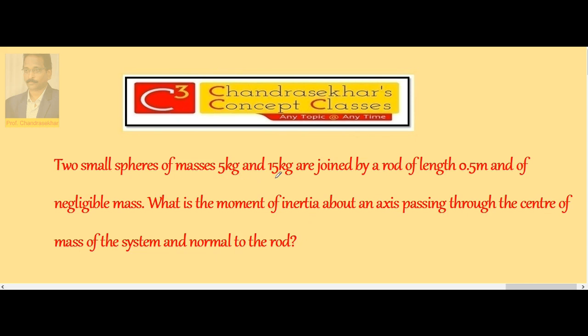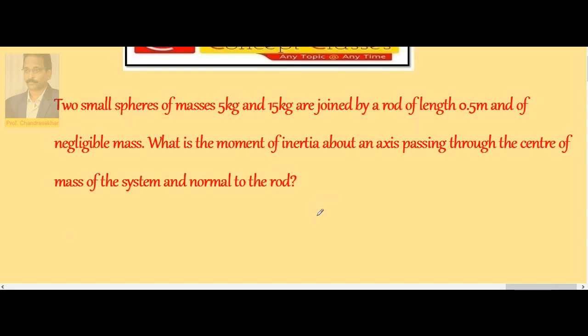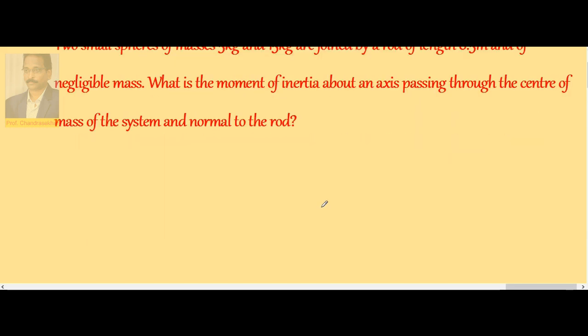So here two masses, 5 kg and 15 kg, are joined to the rod at the ends. Rod mass is negligible, but we need the moment of inertia of this system about an axis passing through center of mass.